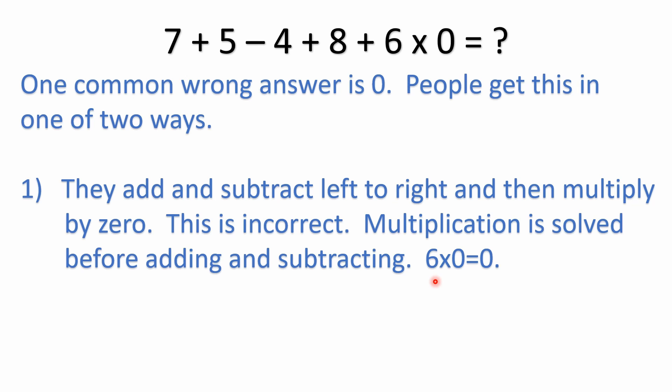Now, one of the common wrong answers to this problem is 0, and people are getting 0 in one of two different ways. One common way is they're simply adding and subtracting left to right: 7 plus 5 is 12, 12 minus 4 is 8, 8 plus 8 is 16, 16 plus 6 is 22, 22 times 0 is 0. They're just adding and subtracting left to right and then finally multiplying by 0, which is incorrect. You don't solve left to right and ignore the order of operations. The multiplication must be solved before resolving the addition and subtraction — remember, 6 times 0 is 0.